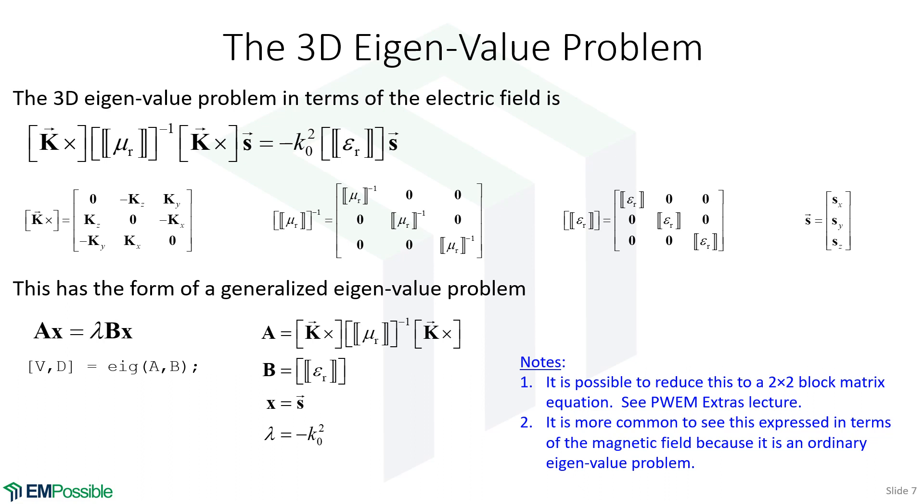I'll also mention we derive this in terms of the electric field. It tends to be what I like to do because I interact with my simulations more through the electric field than the magnetic field. But it's probably more common to derive this in terms of the magnetic field. And the big thing that that does is it swaps mu and epsilon. By moving the mu out here, most of the time the permeability is just air, so this is the identity matrix, and we end up with a standard eigenvalue problem.